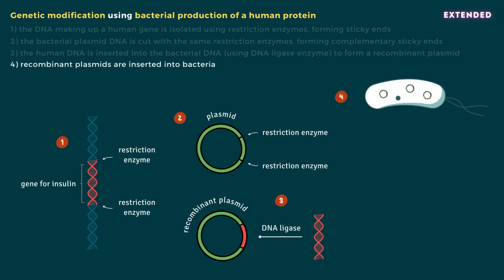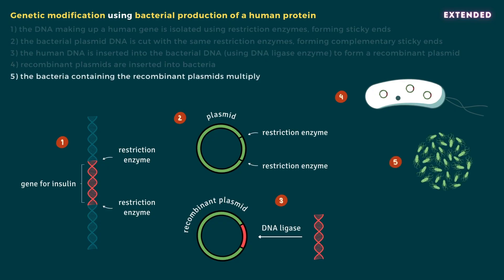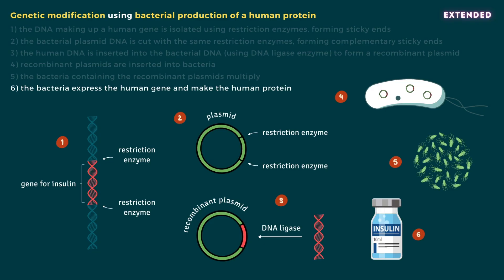Step 4: The recombinant plasmids containing the human gene are inserted into bacteria. The bacteria containing the recombinant plasmids then divide and multiply, expressing the human gene and making the human protein. The human protein, insulin, can then be extracted, purified and used as a medicine to treat people with diabetes.